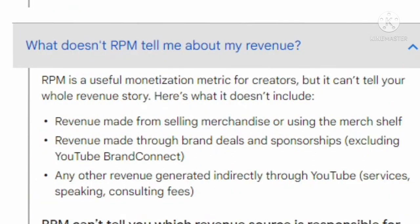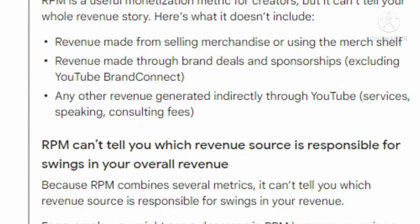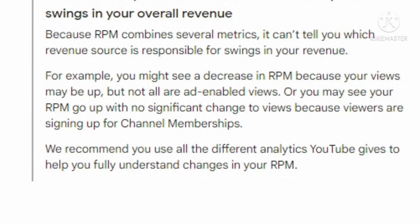What does RPM not tell me about my revenue? RPM is a useful monetization metric for creators, but it cannot tell your whole revenue story. It does not include revenue made from selling merchandise, revenue made through brand deals and sponsorships excluding YouTube Brand Connect, or any other revenue generated indirectly through YouTube such as speaking or consulting fees. Because RPM compiles several metrics, it cannot tell you which revenue source is responsible for a change in your overall revenue.